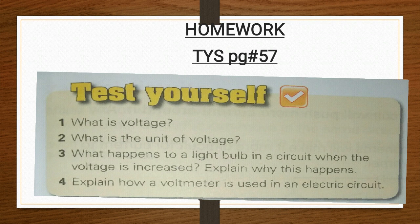Here is the test yourself for today's lecture, on page number 57. First question: what is voltage? Define it. Second: what is the unit of voltage? Third: what happens to a light bulb in a circuit when the voltage is increased? Fourth: explain how a voltmeter is used in an electric circuit. The first two questions — what is voltage and what is the unit of voltage — you can attempt now. The last two you will attempt on your own. Thank you so much.